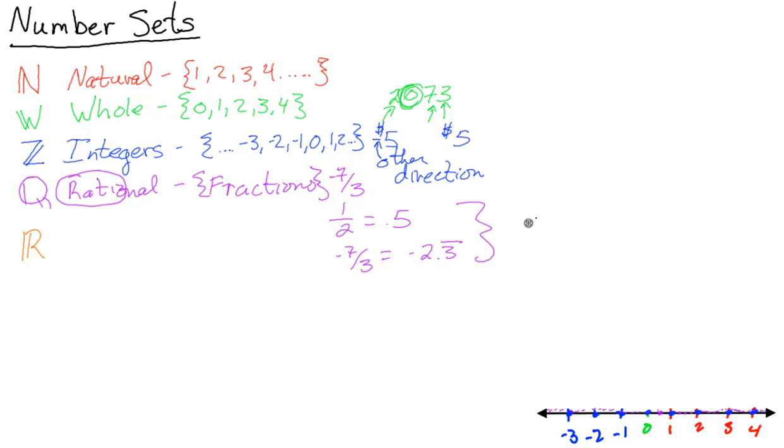When you start sticking these into calculators, you realize like one half—if you stick it in you get 0.5. If you do negative seven thirds, you get negative 2.33333 on forever. These kind of help us see that when you turn them into decimals, you will either get a decimal that either stops, terminates, or repeats a pattern. And that is how you can identify rational numbers.